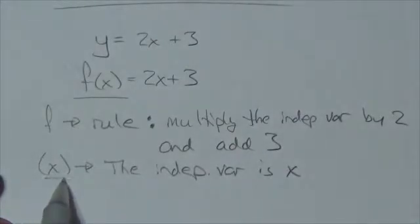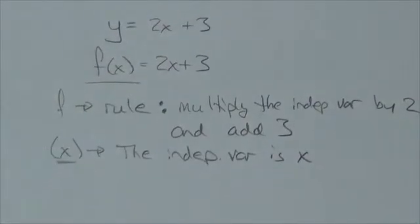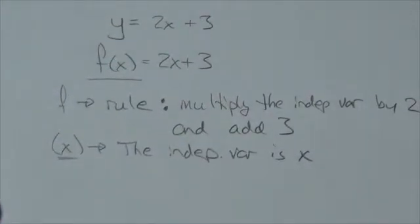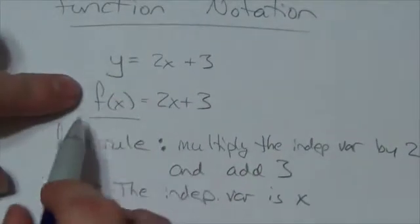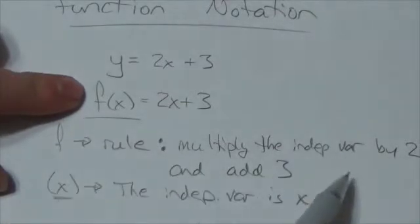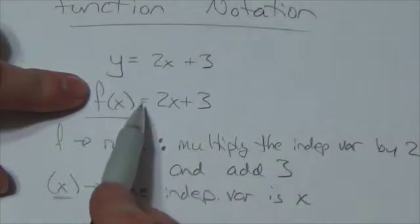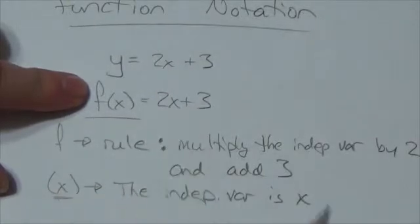Whatever is showing up inside the parentheses there is being used to replace the independent variable here. So what this rule says here, f is multiply the independent variable by 2 and add 3. The independent variable is x. Therefore, this means 2 times x plus 3.